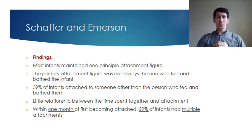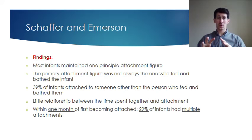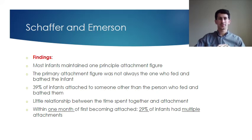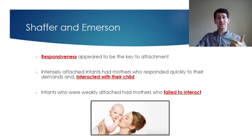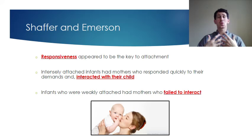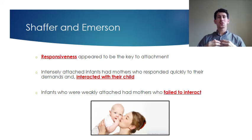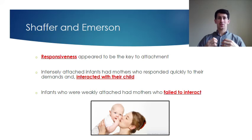Within one month of forming that first attachment, 29% of children had many more attachments, so Schaffer and Emerson found that once you've got that one attachment you can start forming others — with the father, grandfather, uncles, aunties. The main conclusion was that responsiveness is the key. Children who were securely attached had mothers who responded quickly to their demands. Infants with weak or no attachments had mothers who failed to interact with them. Responsiveness to a child's needs is the key to forming attachment — not just spending time, feeding, or bathing them.